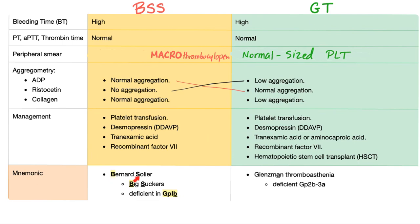Mnemonic: Bernard-Soulier — BS — stands for 'Big Suckers.' The platelets are big in size but their function sucks. Bernard-Soulier has GP1B — B for Bernard, so B matches B. Glanzmann's thrombasthenia has an A — the problem is in GP2B3A. Count the A's in Glanzmann's thrombasthenia: three A's — 3A — matching GP2B3A.